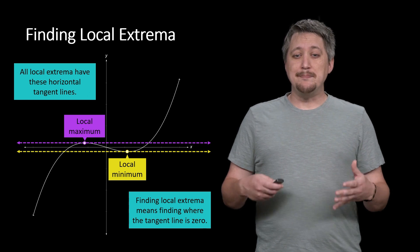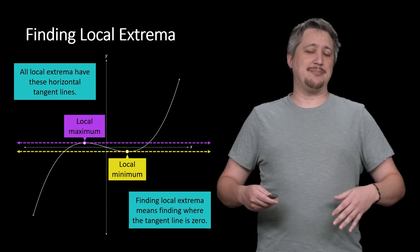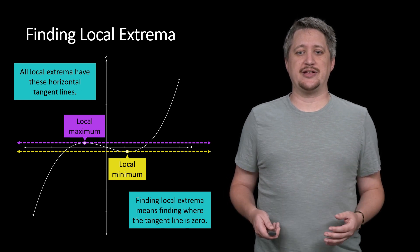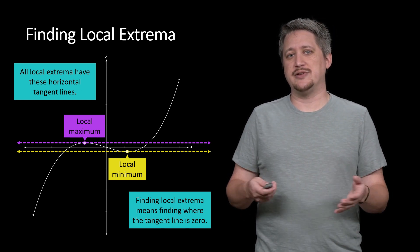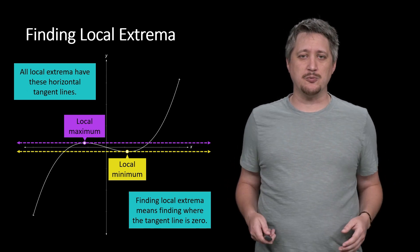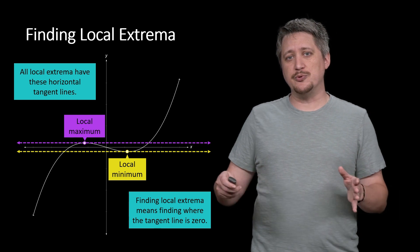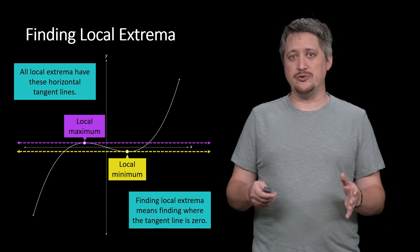So that means that finding local extrema means basically finding where these tangent lines are zero. So we make this observation, and I'm making this claim that this is always going to happen. But it's a good idea to double check that - how do we know that this isn't a special case? How do I know this is always going to work? So we're going to see why this is always going to work.